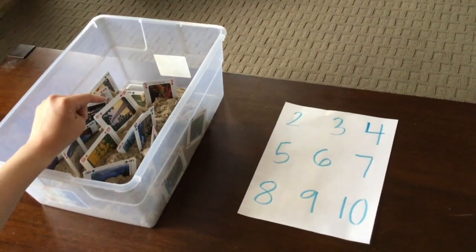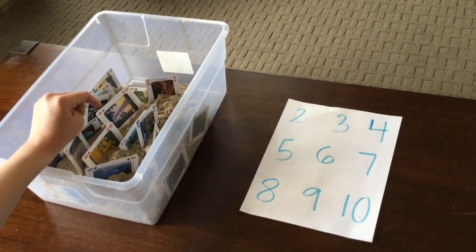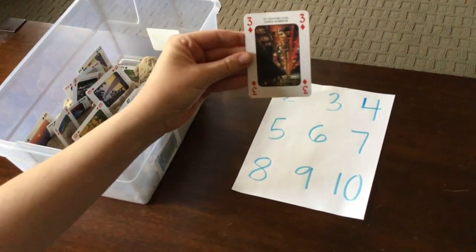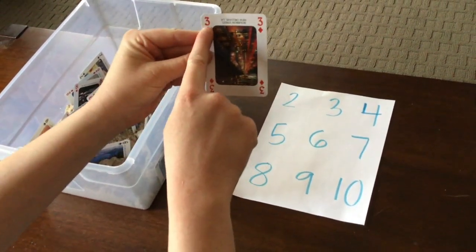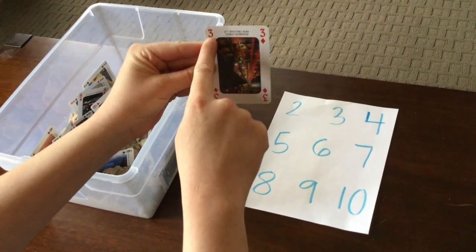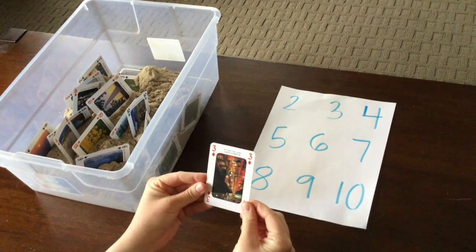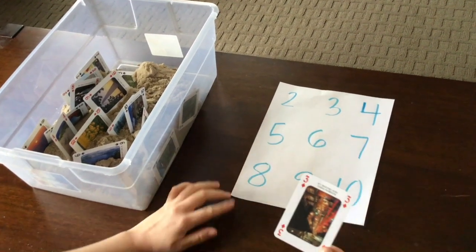Next, we are going to dig in the bin or a bowl or whatever you have and pick a number. Here's the first one I got. What number is this? Yes, it's number 3. Next, we are going to match it. So, find number 3 on the sheet.